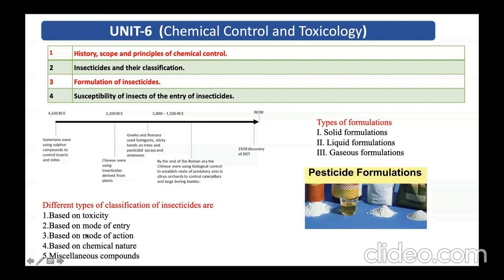Then coming to based on mode of action. Mode of action may be physical poison, protoplasmic poison, respiratory poison, nerve poison, all those things. Then based on chemical nature, that may be inorganic or organic. Inorganic may be arsenical compound, sulfur compound, which don't have the carbon component. And then organic which having the carbon component, that may be organochlorine, organophosphorus, synthetic pyrethroid, and many more based on the chemical nature.